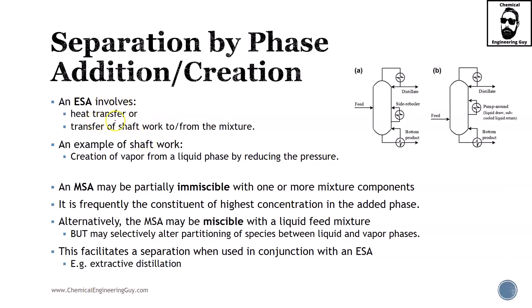An ESA involves heat transfer or transfer of shaft work. You can use work to reduce or increase pressure, not only heat. An example of shaft work is vapor creation due to reduced pressure in the system. Let's say you have this flash drum with a piston and you remove it - you're increasing the volume, therefore vapor must be created.